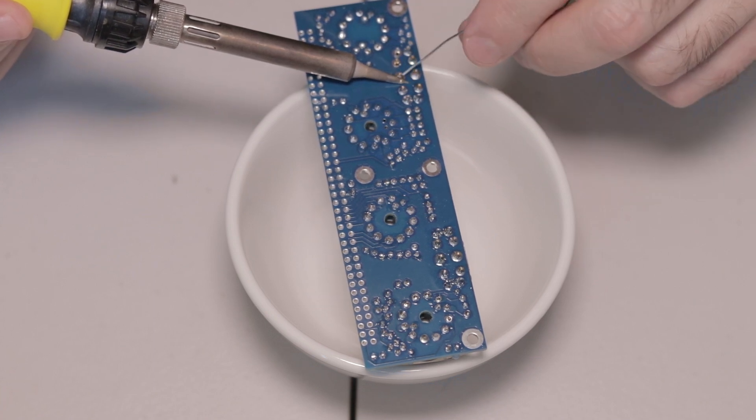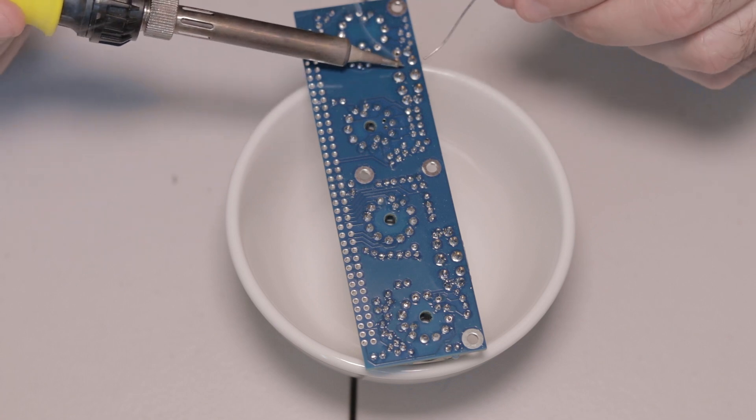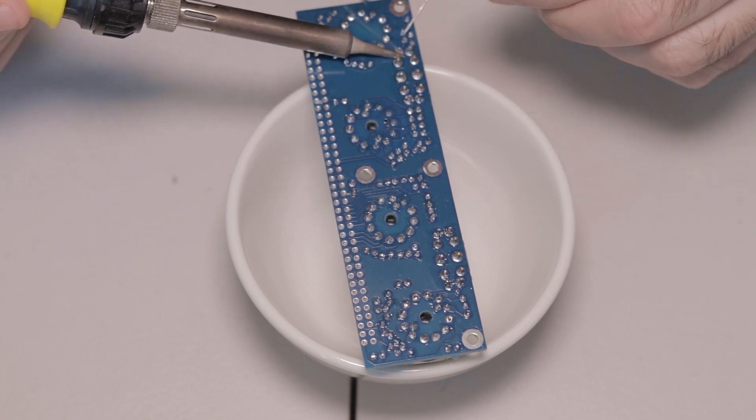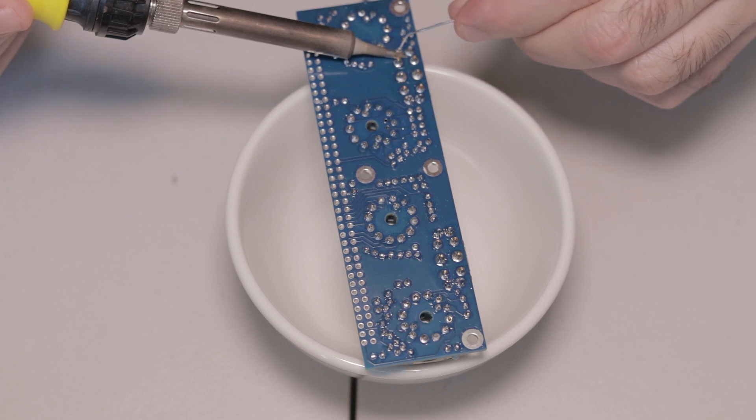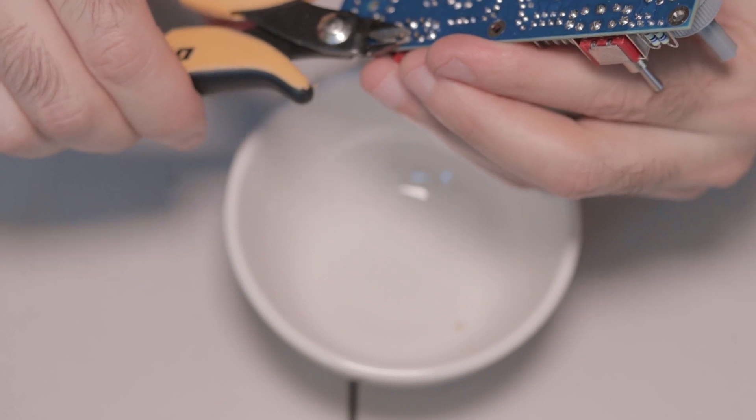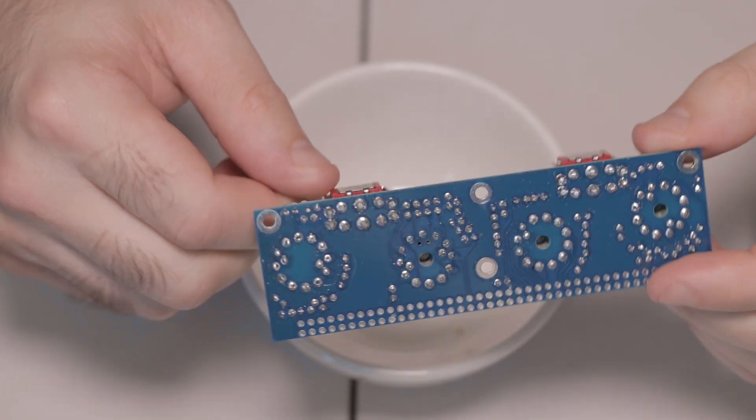And like with the other switches, you want to make sure that they are nice and flat on the PCB, so just hold them in place, solder one of the legs, then check the orientation, and then solder the rest of the legs, and then give them a snip.